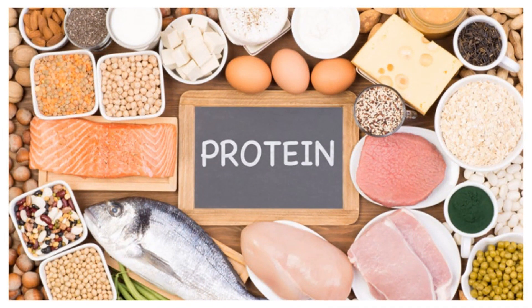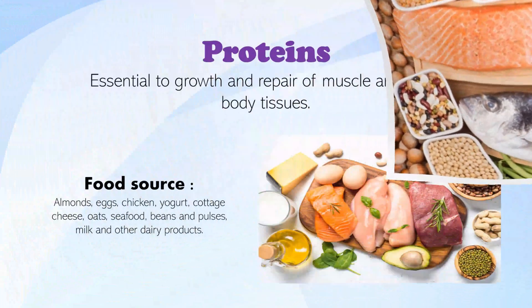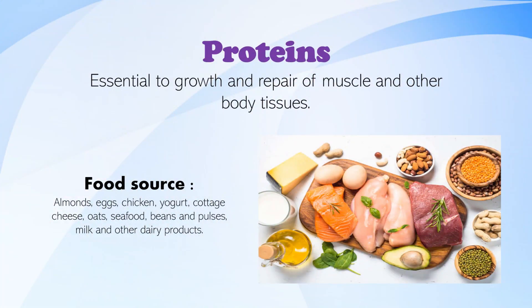Another macronutrient is protein. Just as stones and bricks are the building blocks needed for a wall, proteins are the building blocks of our body. Proteins are essential to the growth and repair of muscle and other body tissues. Proteins are obtained from almonds, eggs, seafood, yogurt, beans and pulses, milk, etc.